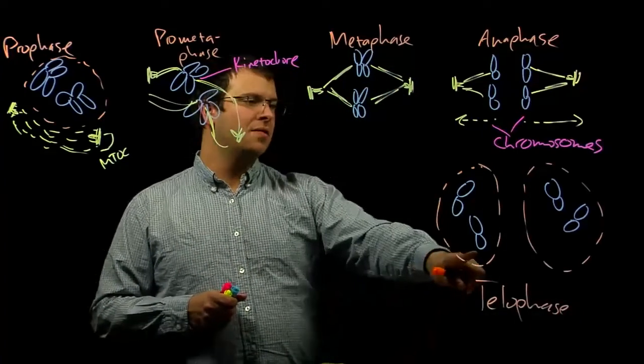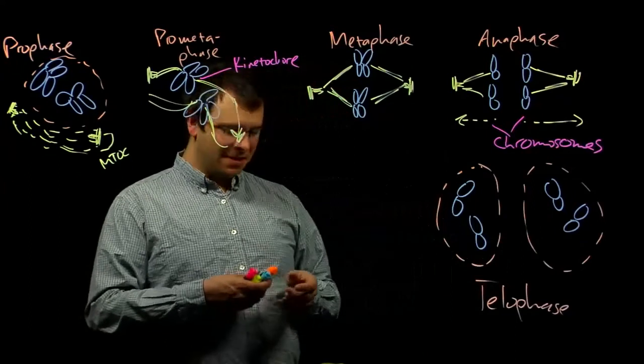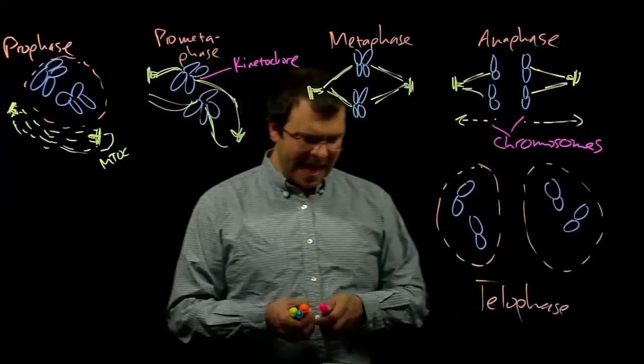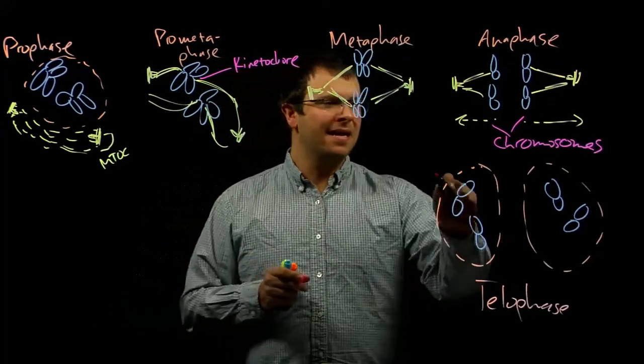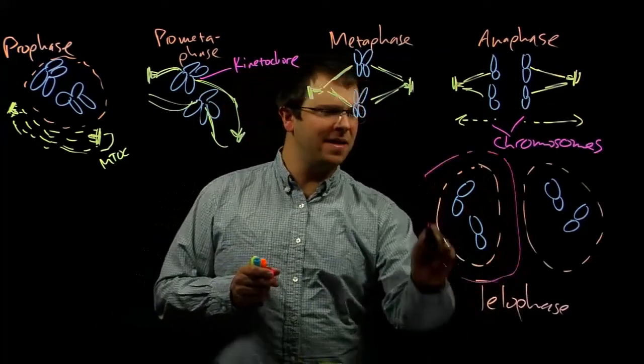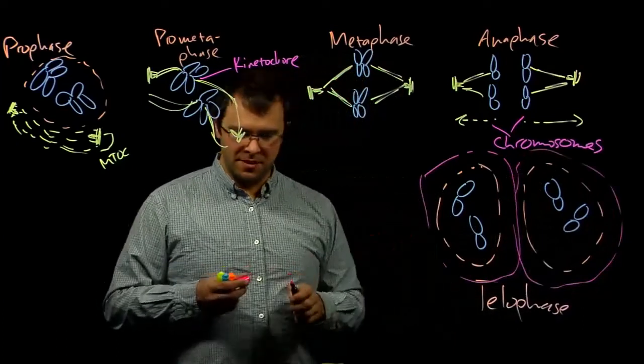The nuclear envelope reforms around both sets of chromosomes. And then eventually the plasma membrane kind of pinches in between these, and you end up with two cells.